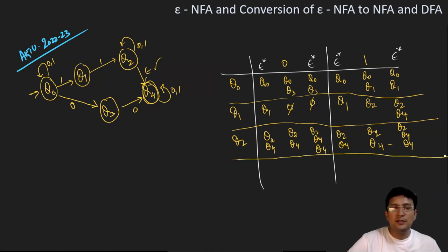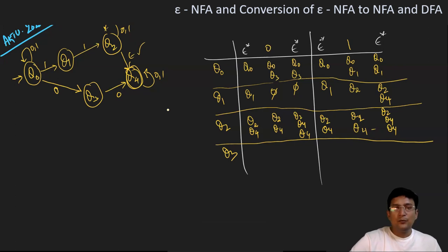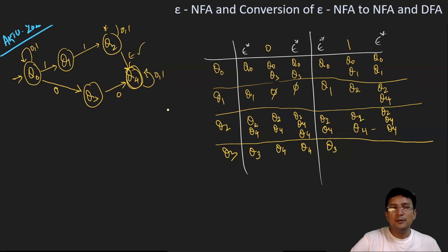Now it's time to define the transition for state q3. The Epsilon closure of q3 is only q3, since no Epsilon transition is defined on q3. On 0, q3 moves to q4, and the Epsilon closure for q4 is q4. On 1, q3's transition is not defined, so if we take the Epsilon closure of this, it will also be undefined.